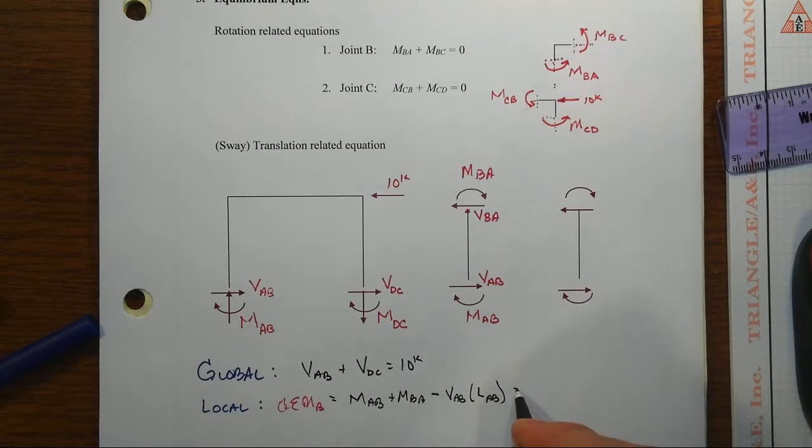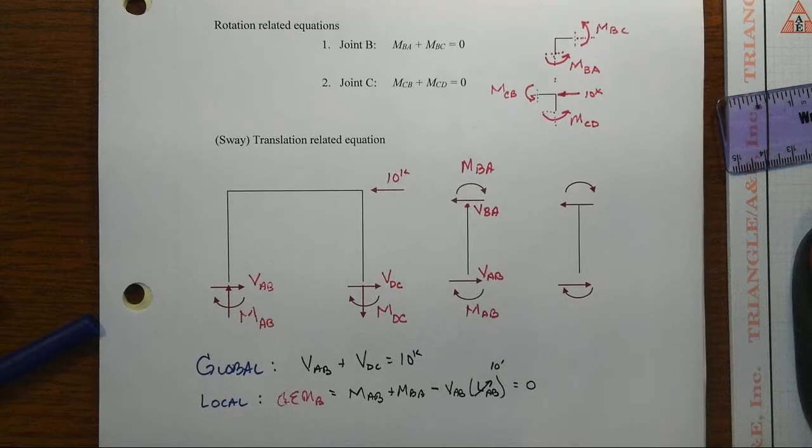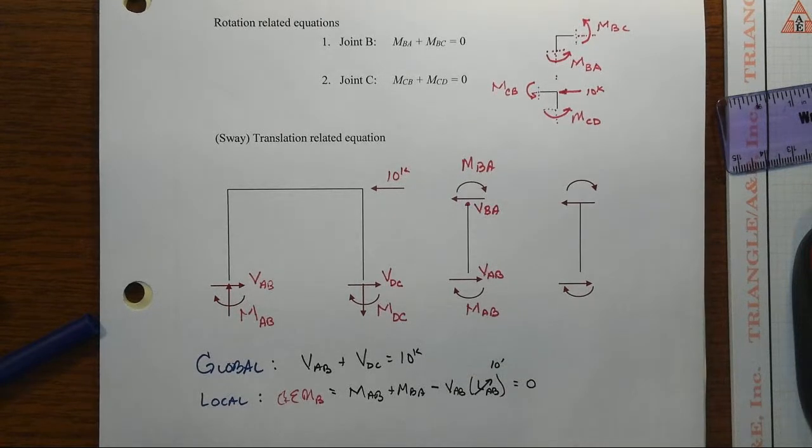And that has to be equal to zero. That column length in this case is 10 foot.